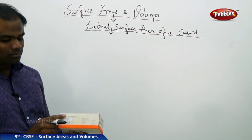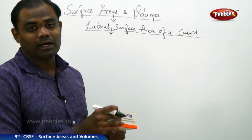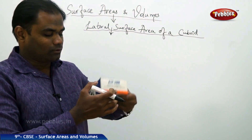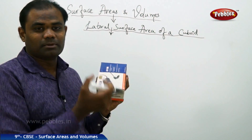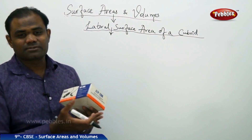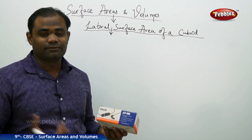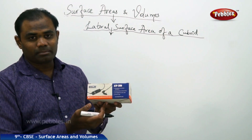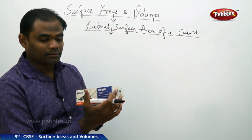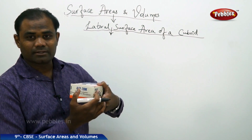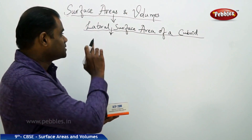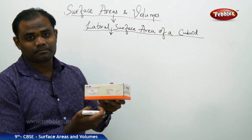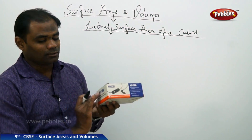Here is a cuboid with length, width, and height. As we have seen, there are six faces — one, two, three, four, five, and six — including the top and bottom. If you add all six faces, we get the total surface area of the cuboid. But if we exempt the top and bottom faces and go laterally along the sides, such an area is called lateral surface area. The lateral surface area does not include the top and bottom; it includes only the surface area on the sides.